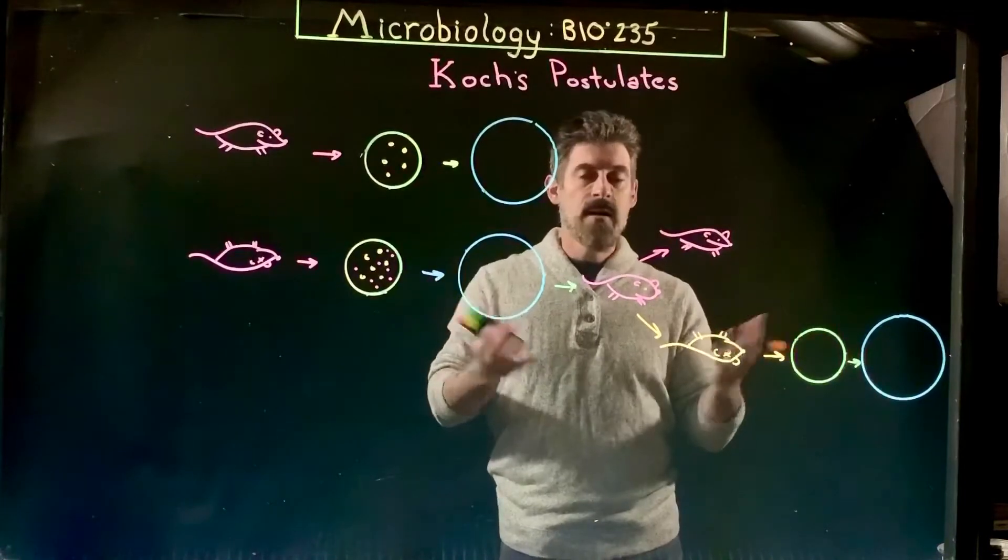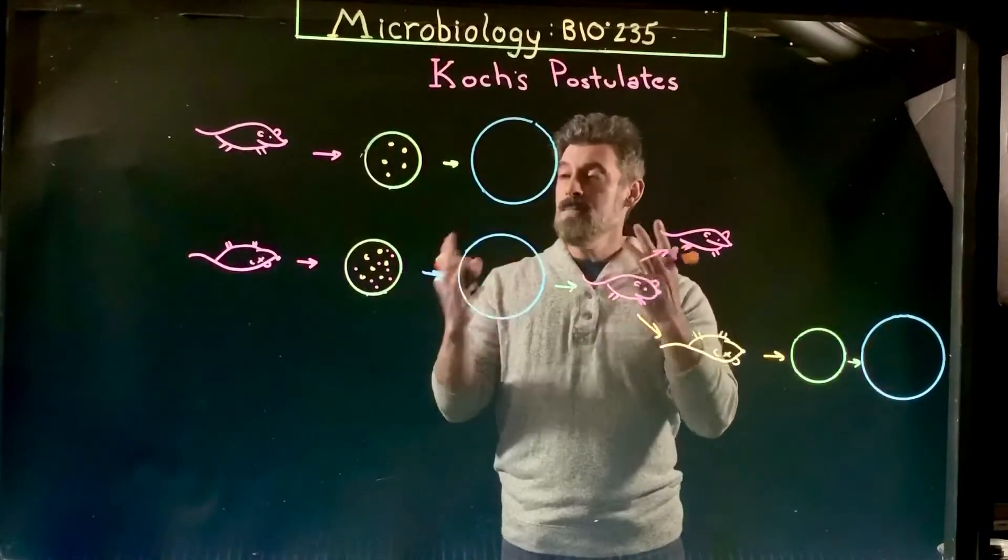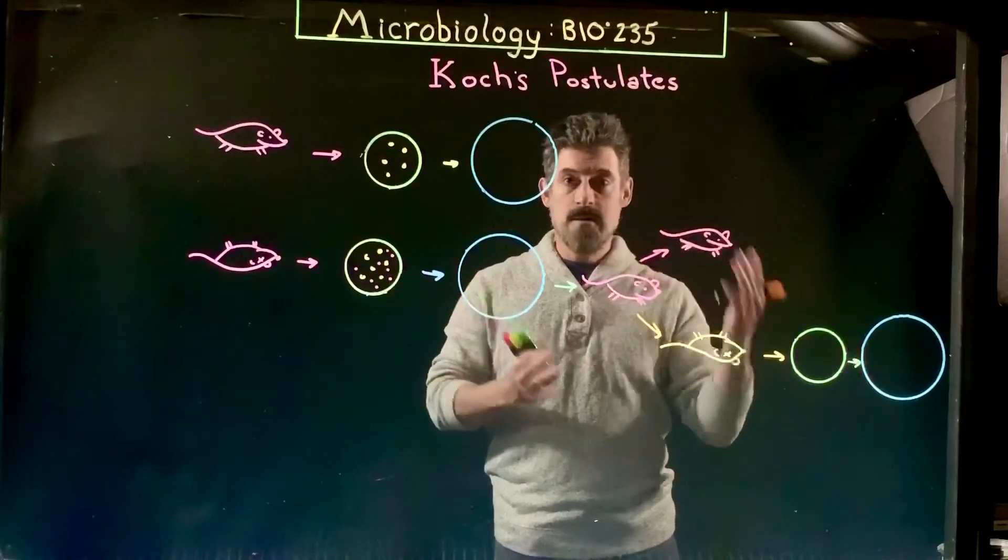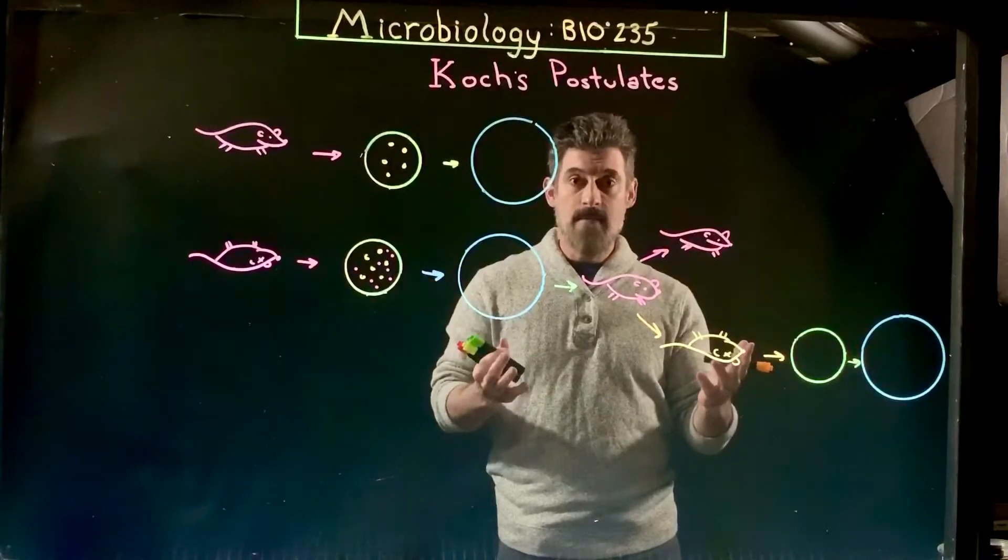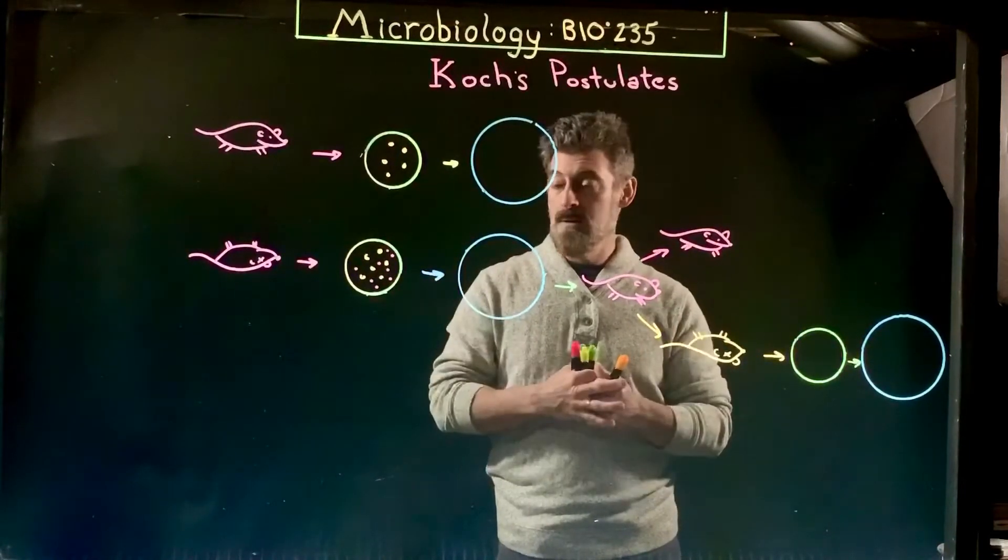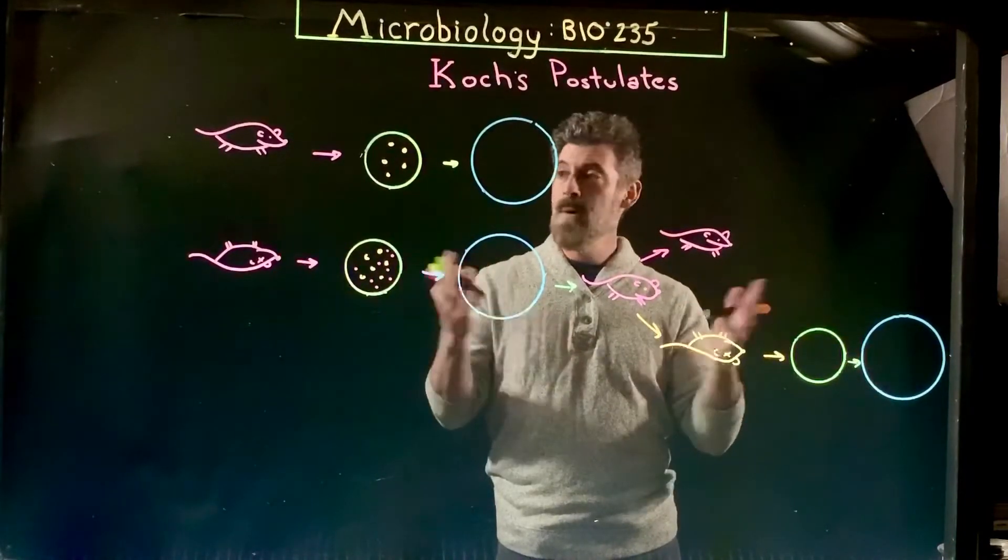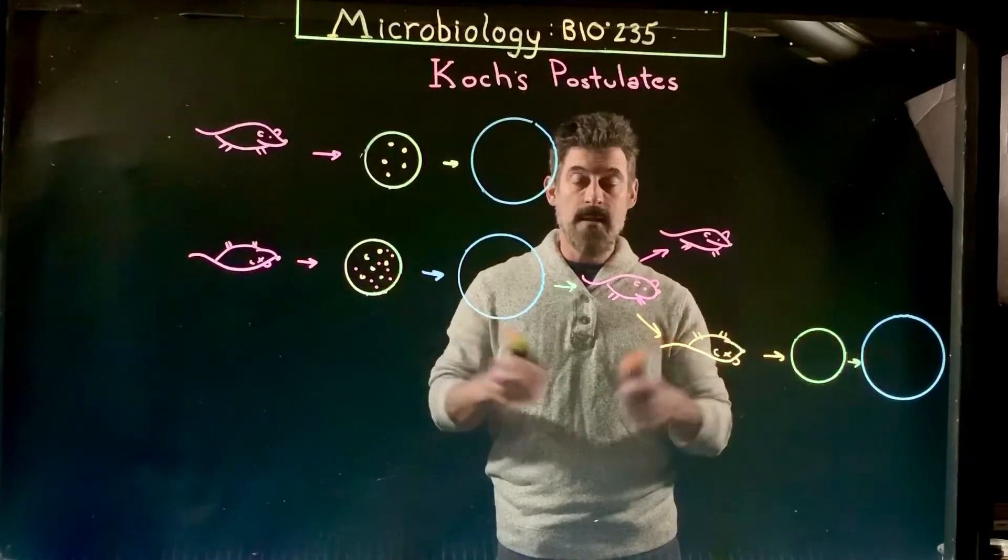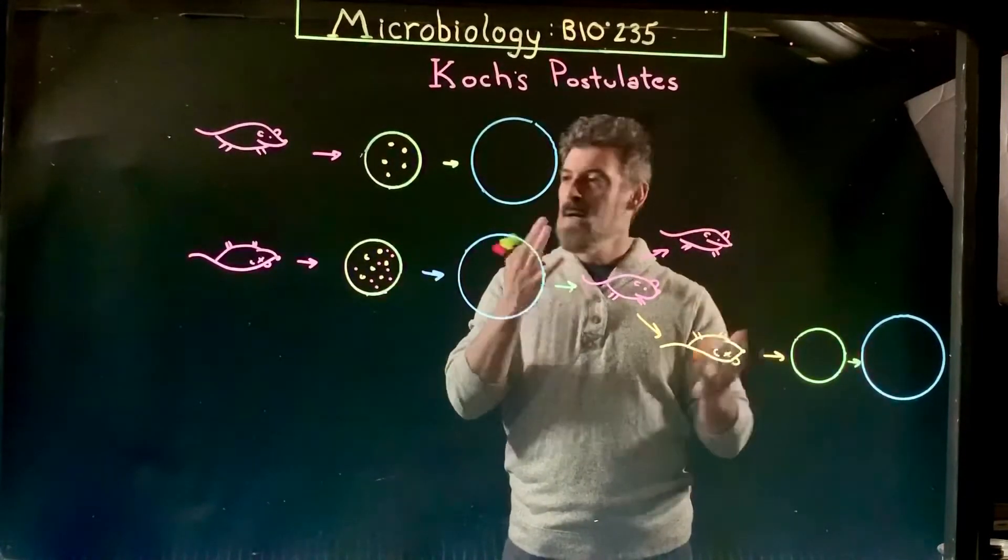They had trouble actually proving in a way that that was the organism and not something else that was just there and had no negative impact. So Robert Koch developed a couple tests using the scientific method that are very logical, and it's something that's continually used today in assessing and finding different infectious diseases and different organisms. There's a couple limitations to it that I'll talk about, but we're going to go over the basics of it right now.